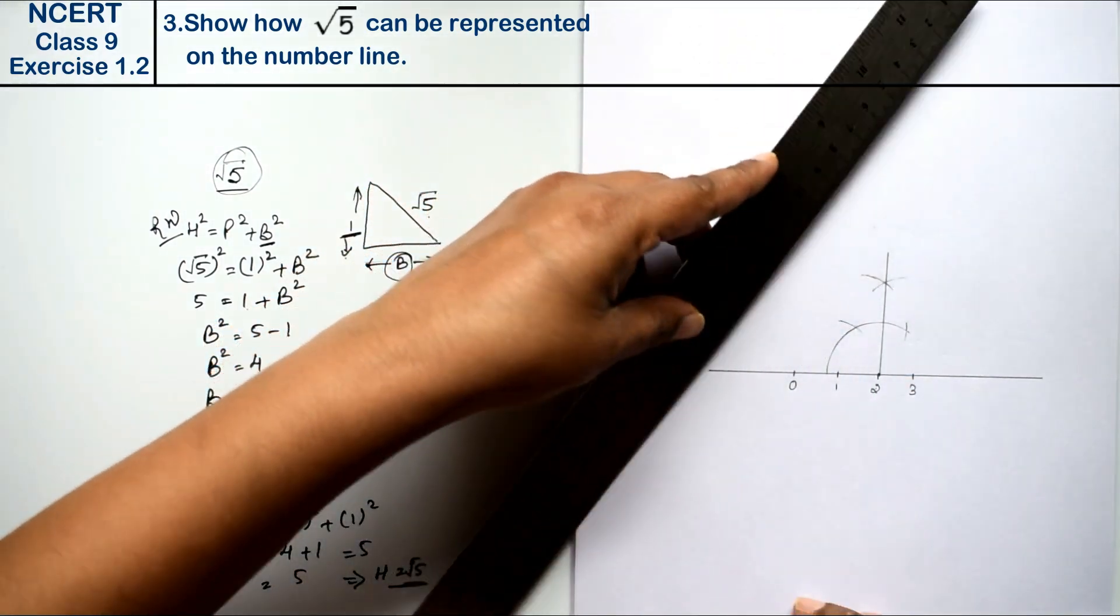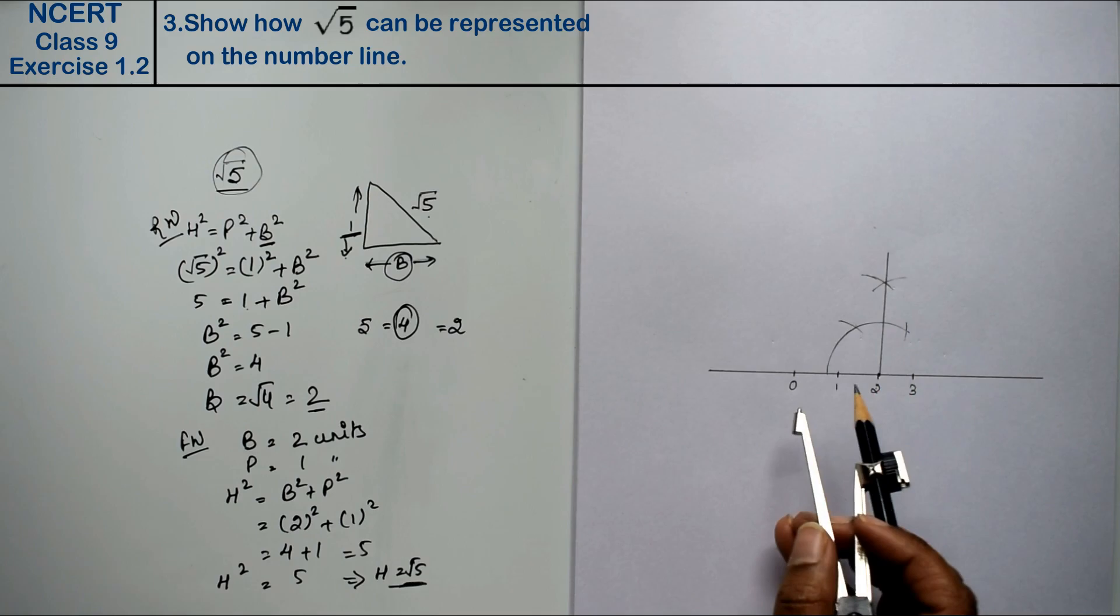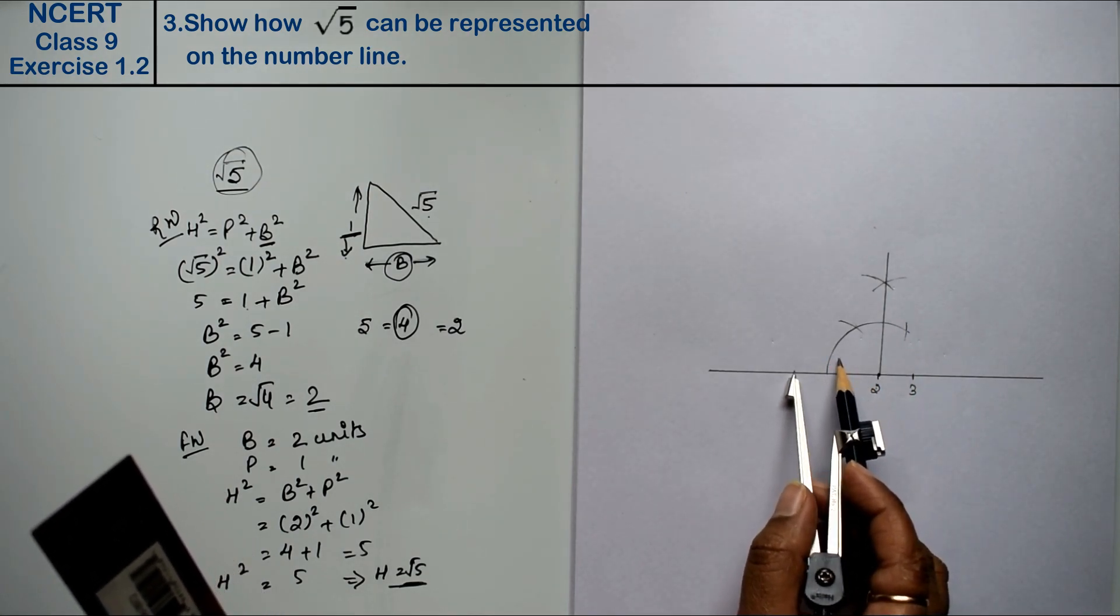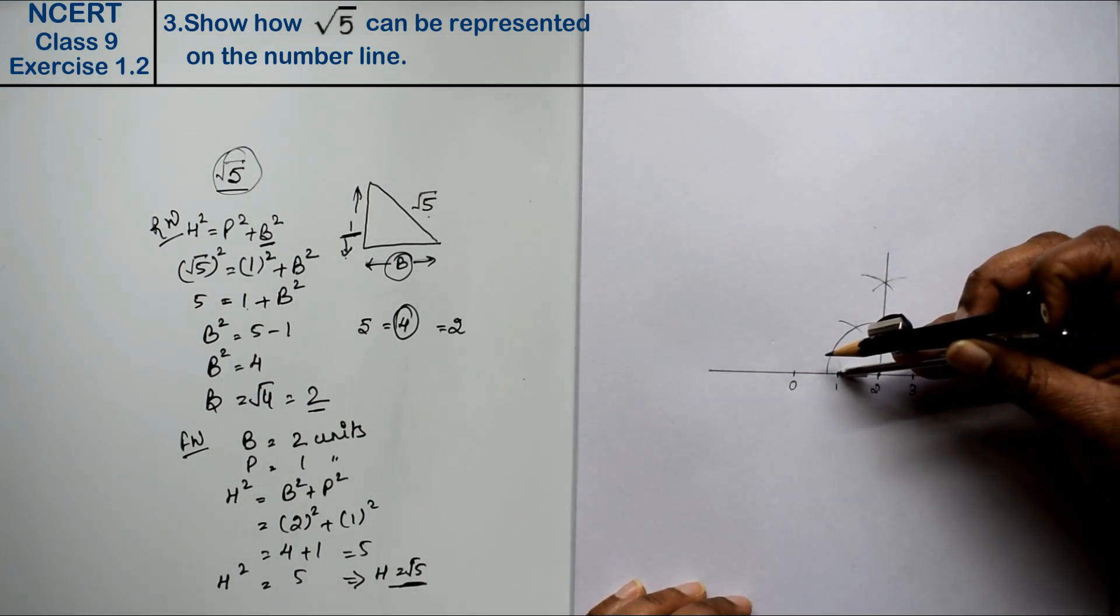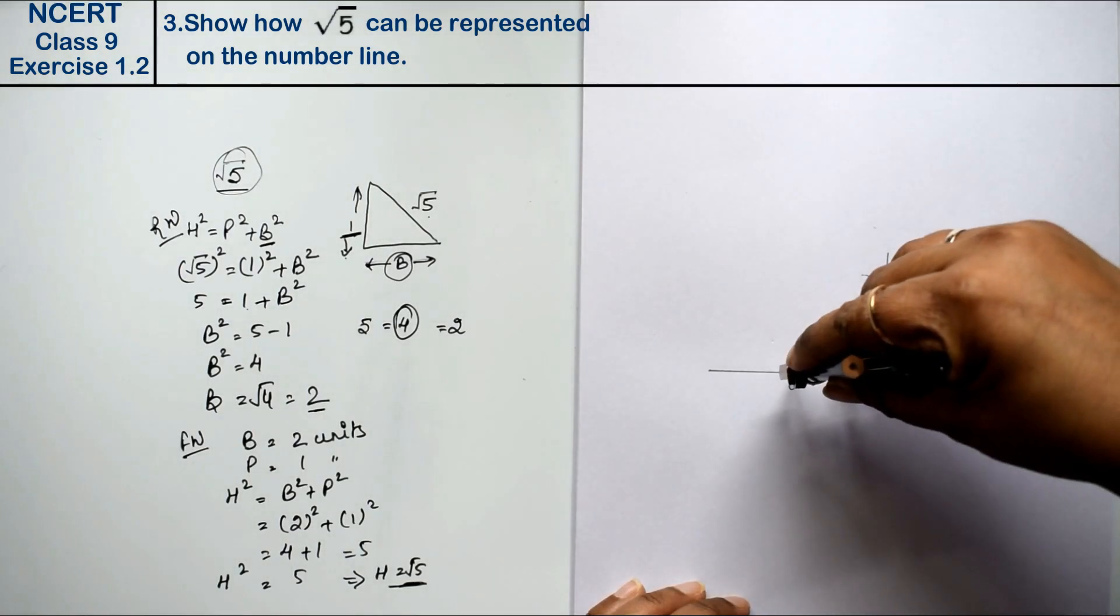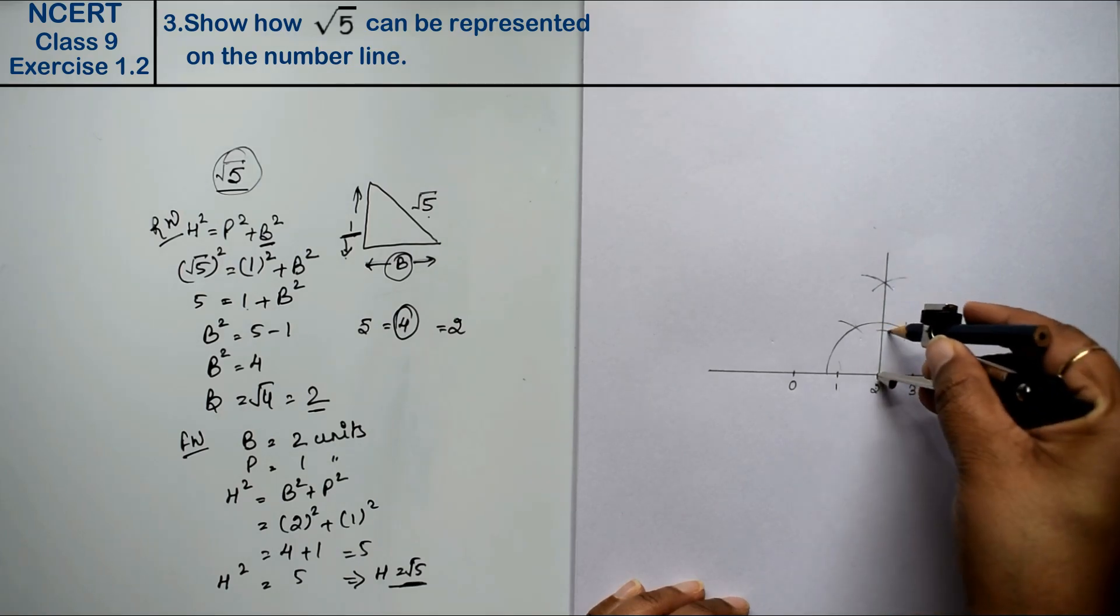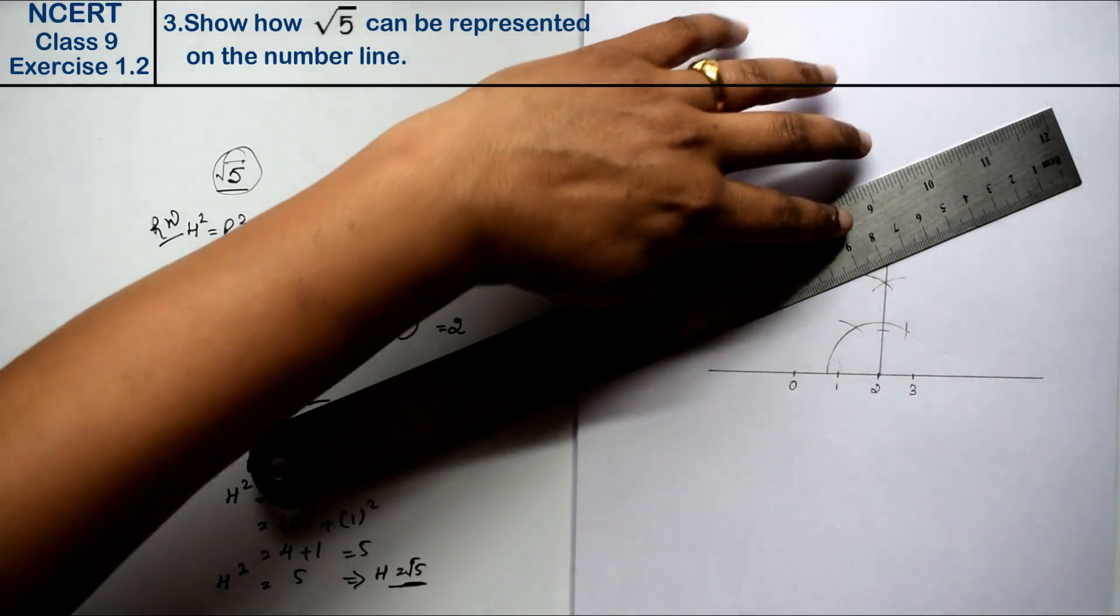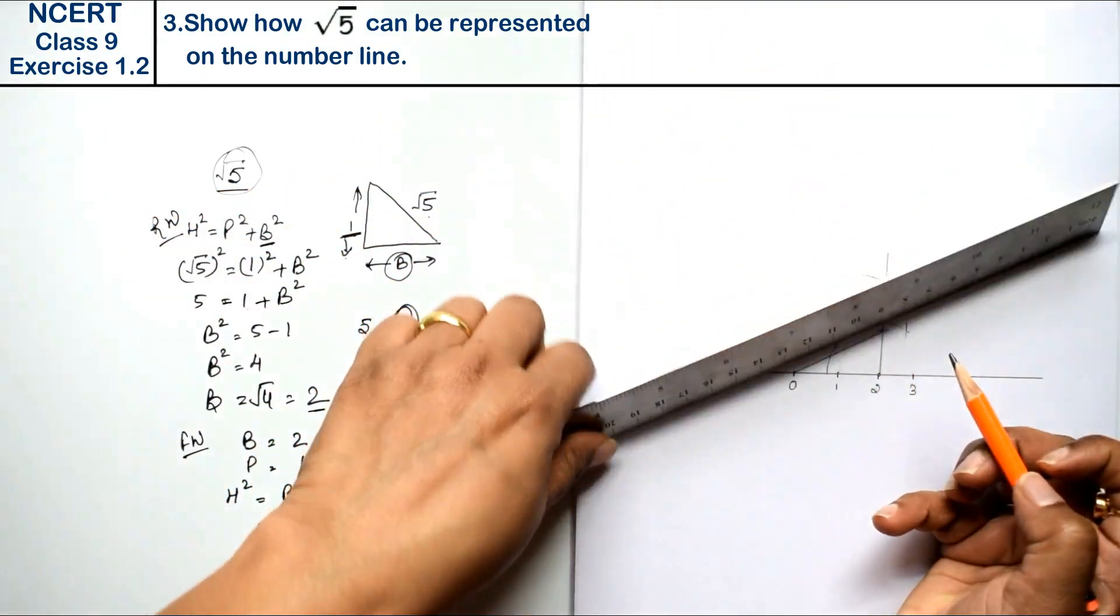And we will join this. We have joined this, right friends? Now we are joined this. We have joined this. We have taken one unit from here. We have taken one unit from here. Now we will join it from zero. This is our Pythagoras Triangle.